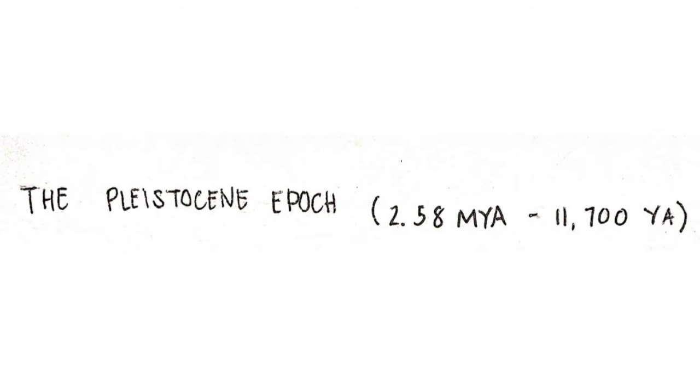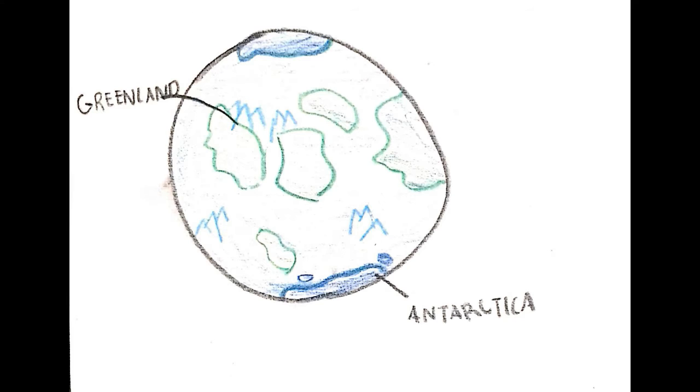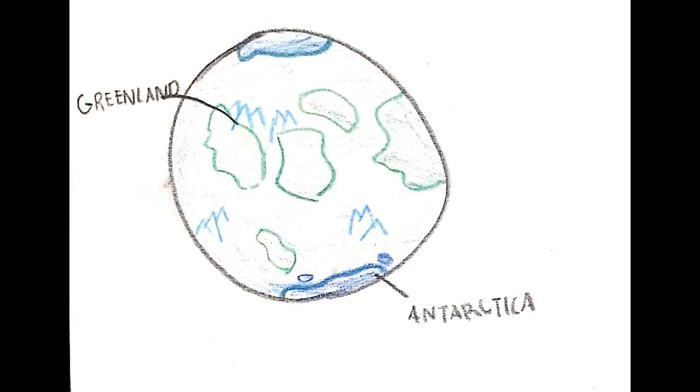The glaciers covered huge parts of planet Earth. The remains of glaciers can still be seen in some parts of the world including Greenland and Antarctica. During the Ice Age, Homo sapiens evolved and humans dominated Earth.